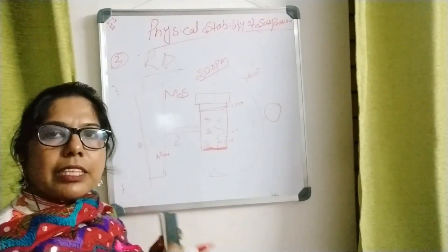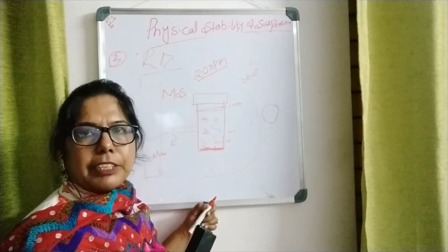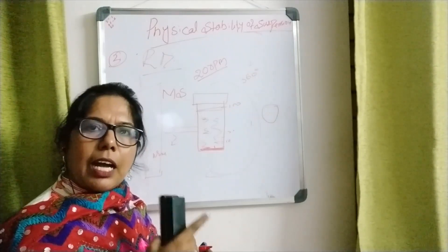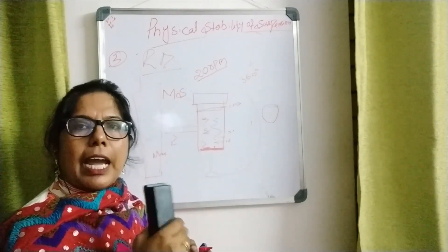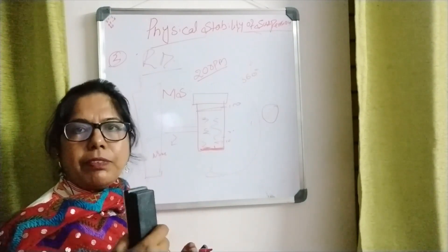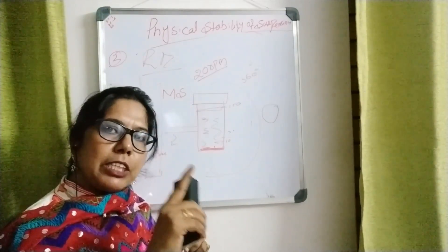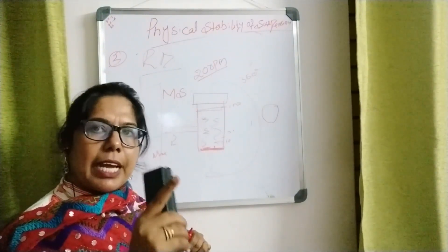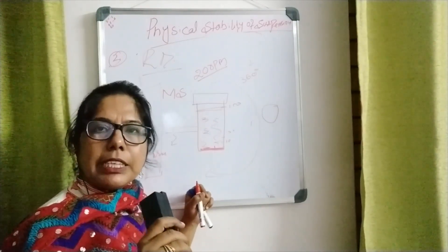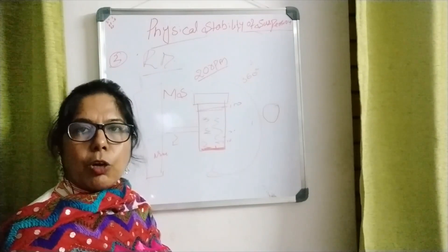This is about the parameters of physical stability of suspension. In summary: sedimentation volume F equals VU divided by V₀, or F equals HU divided by H₀, with a value range of 0 to 1 — nearer to 1 means greater stability. Degree of flocculation beta equals sediment volume of flocculated suspension divided by deflocculated suspension — greater than 1, and higher value means higher stability. Redispersibility: lesser the time to get redispersed, greater will be the stability of the suspension. Hope you have understood. Thank you.